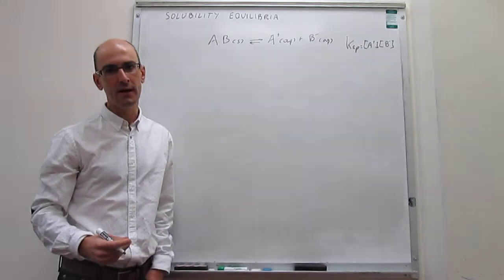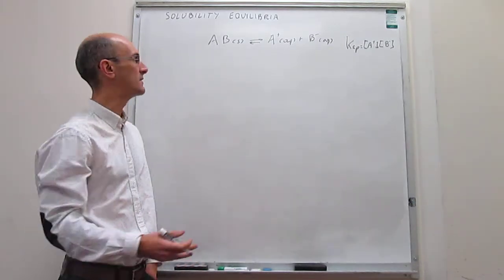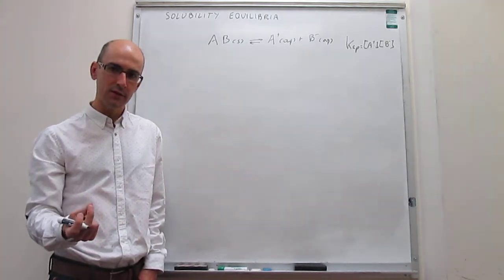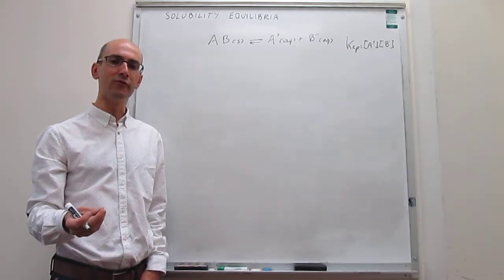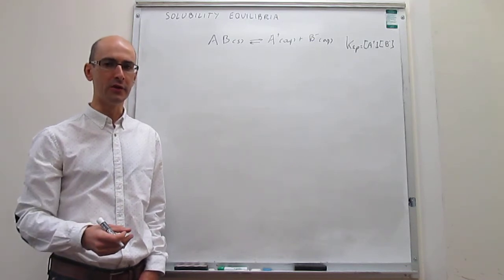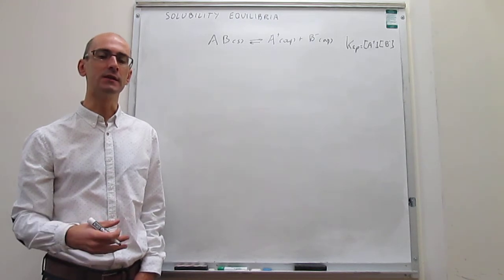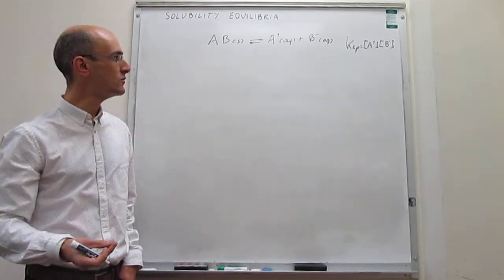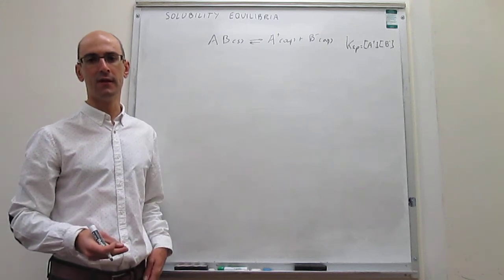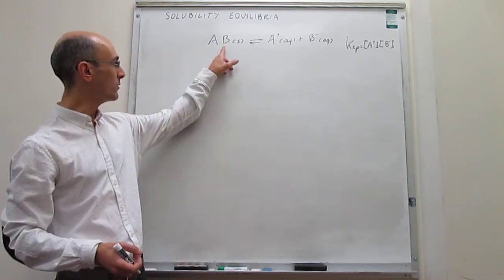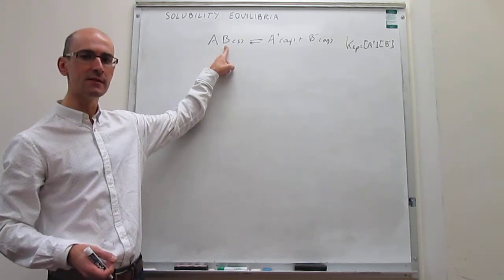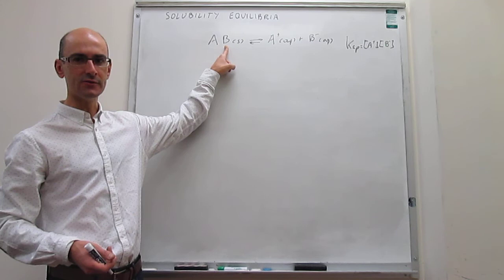We can define how soluble this solid AB is by defining solubility. The definition of solubility is simply the number of moles of solid that dissolve per liter of solution. It would be very difficult to track those moles by looking at the solid itself — you would have to think about changes in mass in the solid, and that is hard to do.